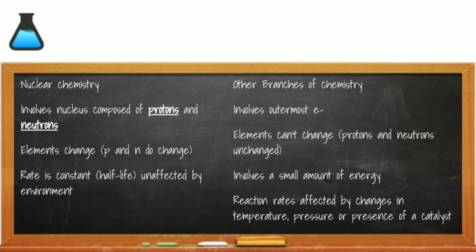In traditional chemical reactions, the part that is changing is the valence electrons — they are shared or transferred in bonds. The elements do not change in traditional chemical reactions, which is how we balance chemical equations by matching symbols on both sides of the arrow. Compared to nuclear reactions, the energy used in a chemical reaction is quite small — nuclear reactions are a thousand to a million times more energetic. Chemical reactions can also be sped up or slowed down by changing temperature or pressure.